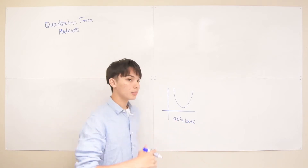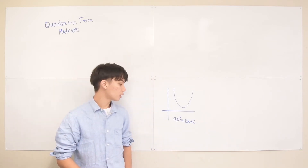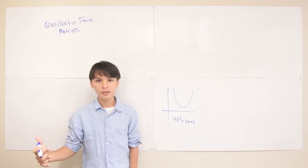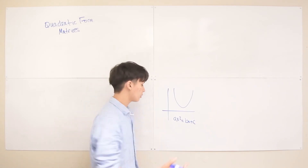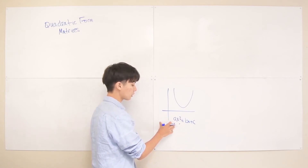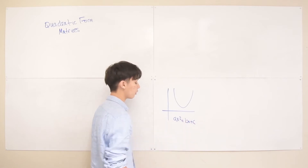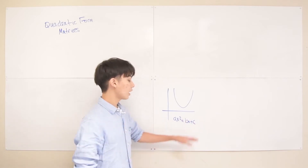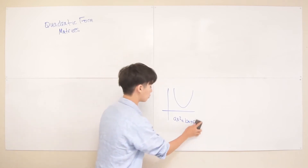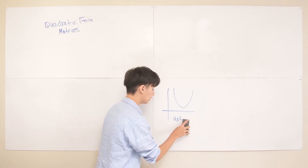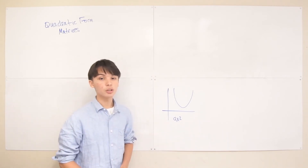Actually, a polynomial in true quadratic form is a polynomial where each term has a degree of two — no more, no less. Notice here that this first term does have a degree of two, so that checks out. But the second one has a degree of one, and the last one has a degree of zero. So to make this a proper polynomial in quadratic form, we have to get rid of the last two terms. Now we have a proper monomial in quadratic form.